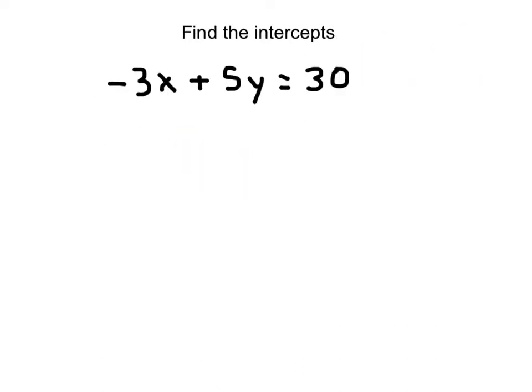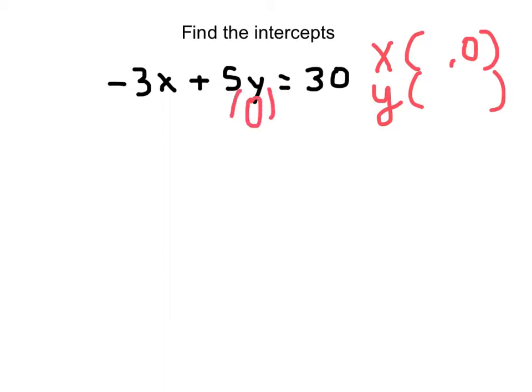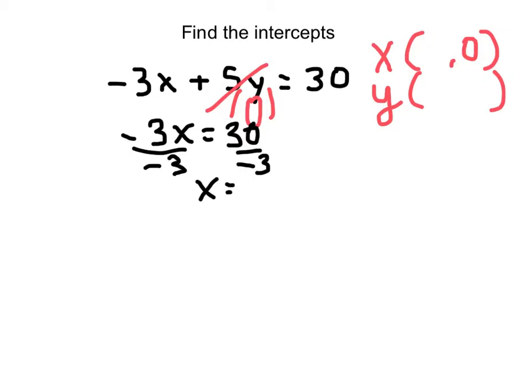Okay, you try this one. Find the x and y-intercept for the equation. Pause your video and then restart it to check your answer. Welcome back. Let's find the x-intercept by substituting 0 in place of y. That term drops out, leaving negative 3x equals 30. Dividing both sides by negative 3 gives x equals negative 10. Therefore, the x-intercept is the point (negative 10, 0).